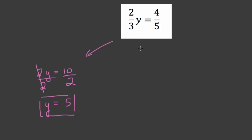And that is precisely what we have here. Here we have 2 thirds times y equals 4 fifths. So we have a coefficient, it's a fraction, but we can divide by this fraction on both sides. And we'll still get the same answer.